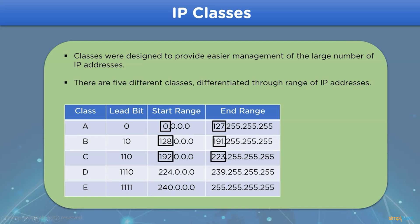Then we have Class C, which can allocate an IP address for a low number of network hosts, where the first 3 bits of the network ID are 1, 1, and 0, ranging from 192 to 223. Through the above 3 classes — Class A, B, and C — we can easily identify and assign addresses to a network host.